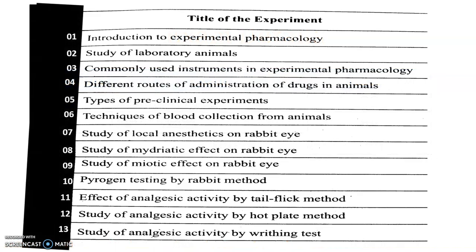Now the next part is the list of experiments. As per the PCI syllabus, a total of 25 experiments are covered. Experiment number one is introduction to experimental pharmacology; experiment two is study of laboratory animals — these cover the basic concepts of experimental pharmacology and the different animals used. Experiment number three covers commonly used instruments like the kymograph, notary drum, levers, student organ bath, cannula, and likewise.